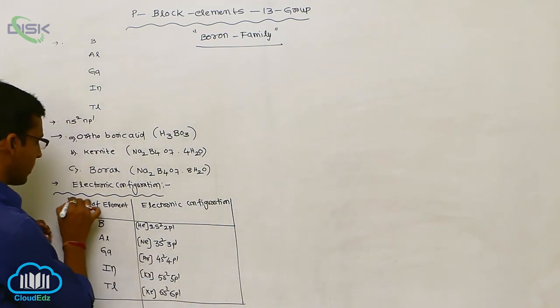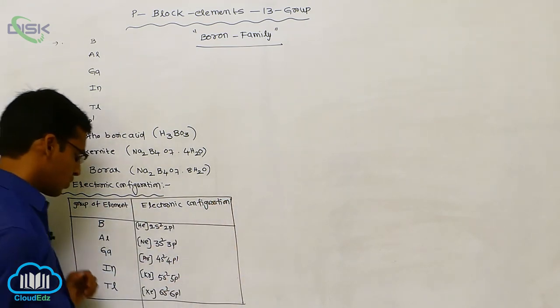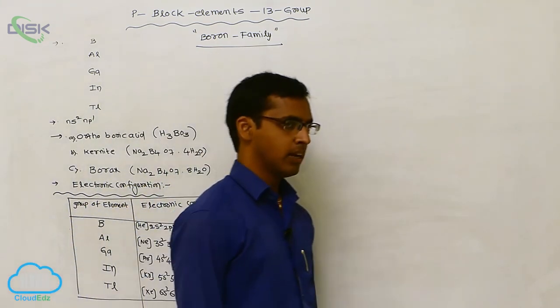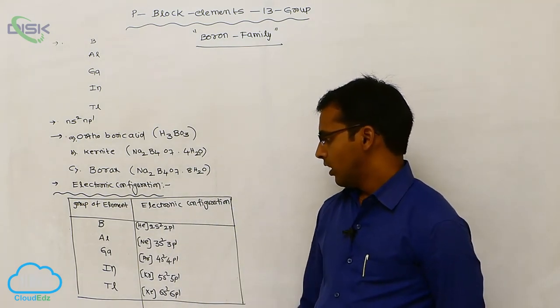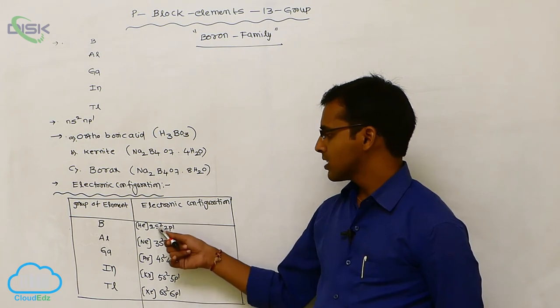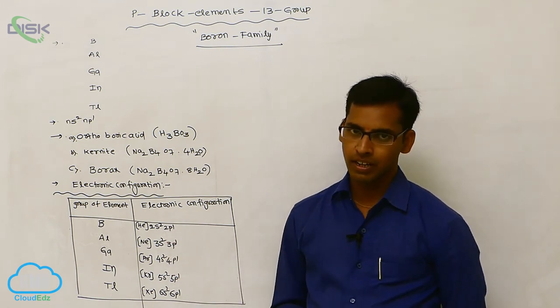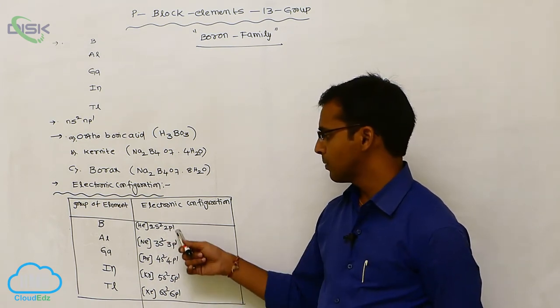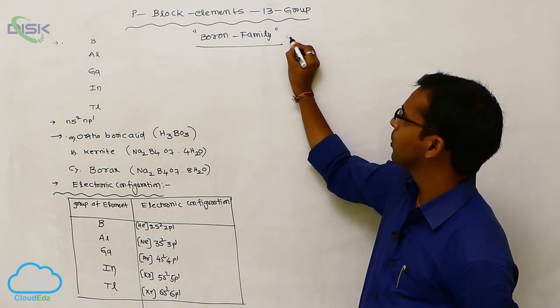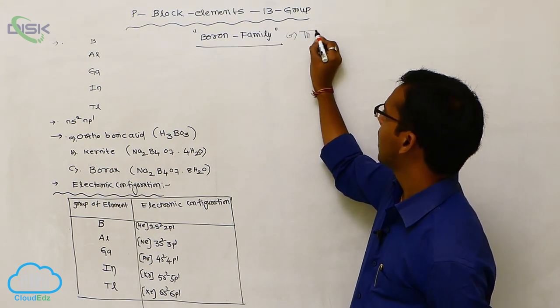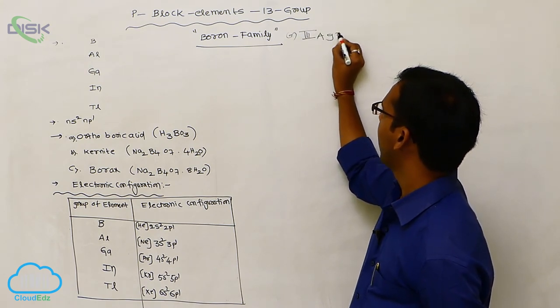So this is our nearest inert gas configuration. So boron, aluminum, gallium, indium, thallium. So the outermost shell containing maximum only 3 electrons. The S orbital is containing 2 electrons and P orbital containing 1 electron, 2 plus 1, that is your 3. That is it is called as 13th A group elements. Another name is 13th A group elements.